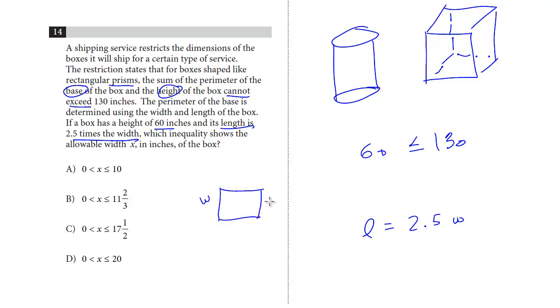Think about the base of the box as just a rectangle. We've got two widths, but instead of length, we're going to substitute 2.5W, 2.5W. We add up the W's, and we get 2.5 plus 2.5 is 5, then 6, 7 - we get 7W. So it's 7W plus the 60 inches of height, less than or equal to 130. We subtract 60 from both sides, we get 7W is less than or equal to 70. So W has to be less than or equal to 10 inches. And if you look at the choices, here it is. X is the inches, the width has to be less than or equal to 10. Obviously it has to be greater than 0 because this is a real-life problem, it can't be negative. The answer is A.